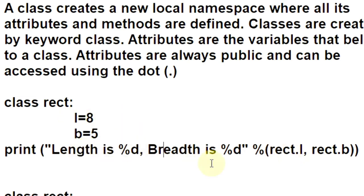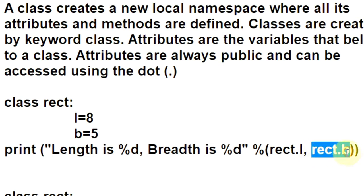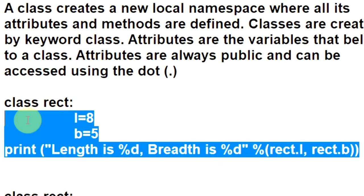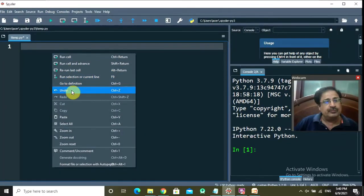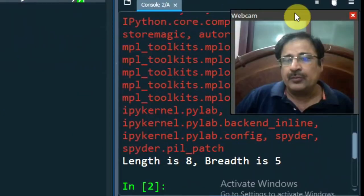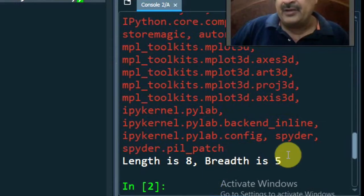This class has only a print statement which displays the class variable values. By writing REC.L, the value 8 will be displayed, and substituting the percent D with REC.B, the value of the B attribute of REC class, so 5 will be displayed. Let us run this simplest class which is without any function. Length is 8, breadth is 5.